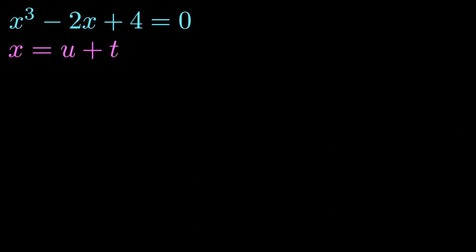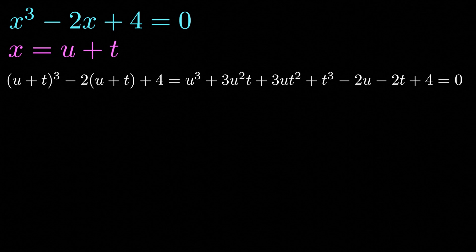So substituting in u plus t for x, we have u cubed plus 3u squared t plus 3ut squared plus t cubed minus 2u minus 2t plus 4, and that is all equal to 0.